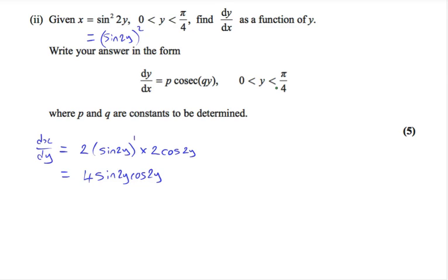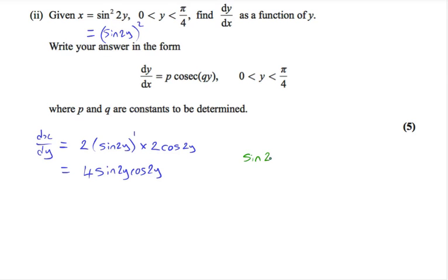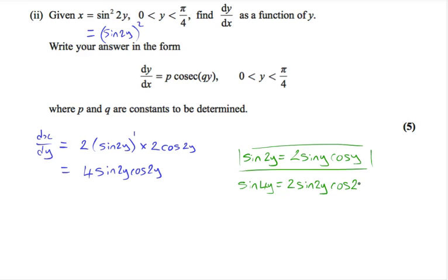Remembering the double angle formula, we know that sin 2y equals 2 sin y cos y. This isn't given in the formula booklet, but it can be derived from the addition formula, which is given in the booklet. If we know that sin 2y equals 2 sin y cos y, we can double these angles to get sin 4y equals 2 sin 2y cos 2y. We're looking for 4 sin 2y cos 2y, so we need to multiply this by 2. We now have 2 sin 4y.